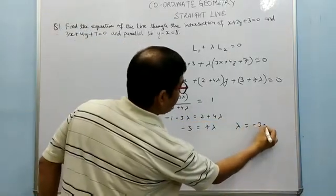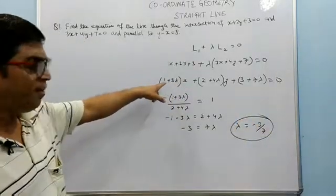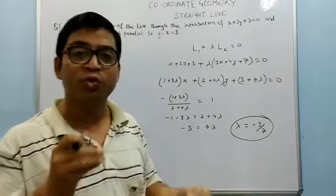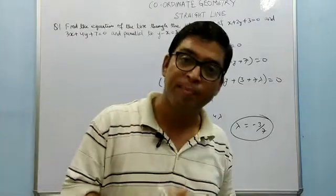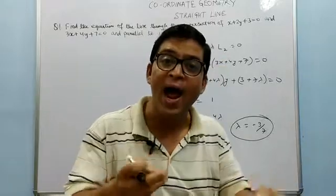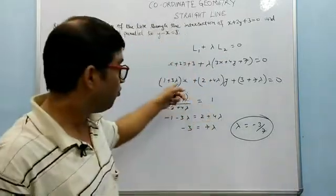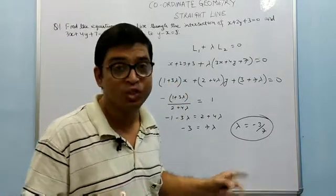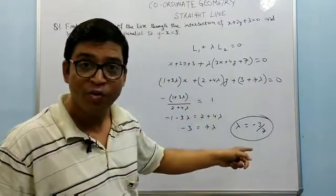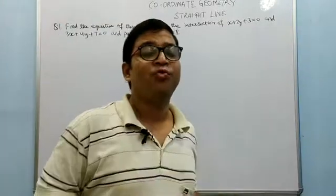So lambda is coming out to be minus 3 by 7. Once we put the value of lambda into the combined equation, we will get the particular line which passes through the intersection of the two lines and is parallel to the given line. So we can easily get the particular line by substituting this value of lambda.